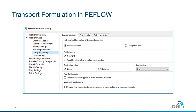FIFLO provides two formulations for solving the mass transport equation: convective form and divergent form. These two mathematical formulations can be found under the problem settings dialog in FIFLO, under the menu Edit > Problem Settings. On the left side of this window you have problem class and transport settings, where you will find these two options along with other settings associated to the transport.